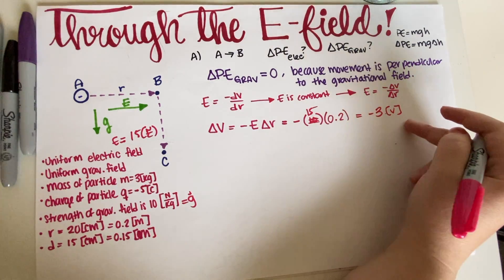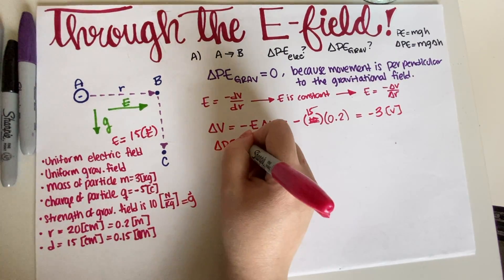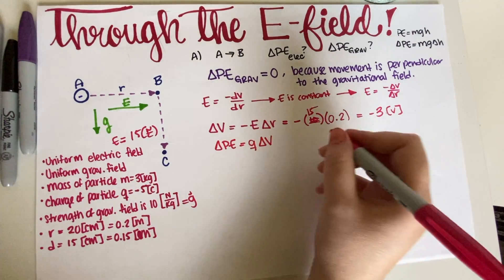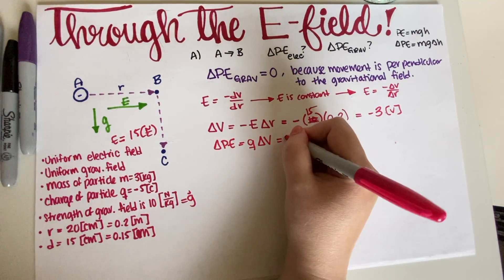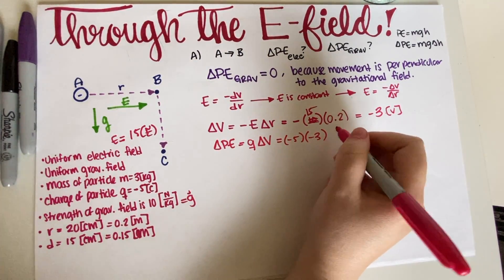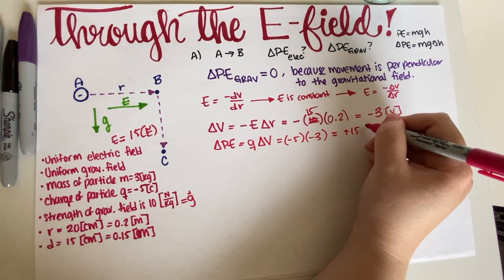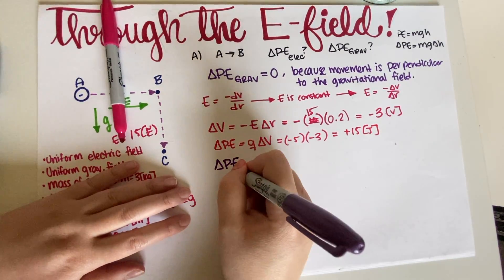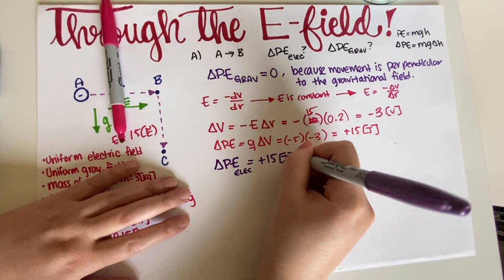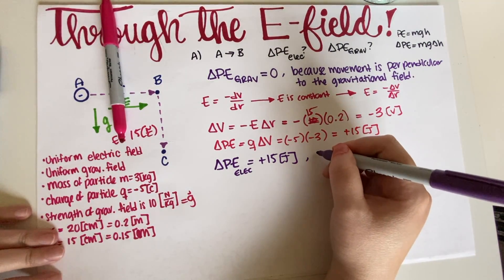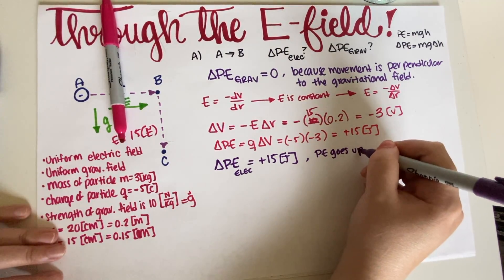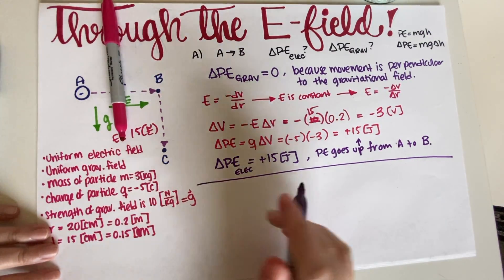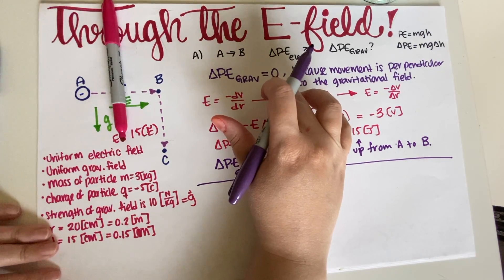Now, the change in electric potential energy is ΔPE = q·ΔV. The charge q is negative 5 coulombs and ΔV is negative 3 volts. So ΔPE_electric = (−5)(−3) = positive 15 joules. That means the electric potential energy goes up from A to B. The gravitational potential energy has no change — it stays the same.